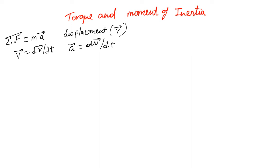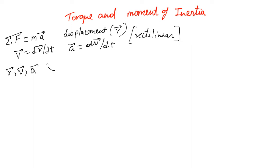So ma equals sum of forces. We have already discussed the analogy between the kinematics equations for a rectilinear system — when things are moving in a straight line — and the angular system. The analogy is between r, v, a and theta, omega, and alpha.